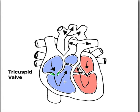Once blood is down in the right ventricle, what the tricuspid valve will do is close back over to prevent blood flowing back into the right atrium. So it prevents backflow of blood and sends blood in one direction, which is like so.